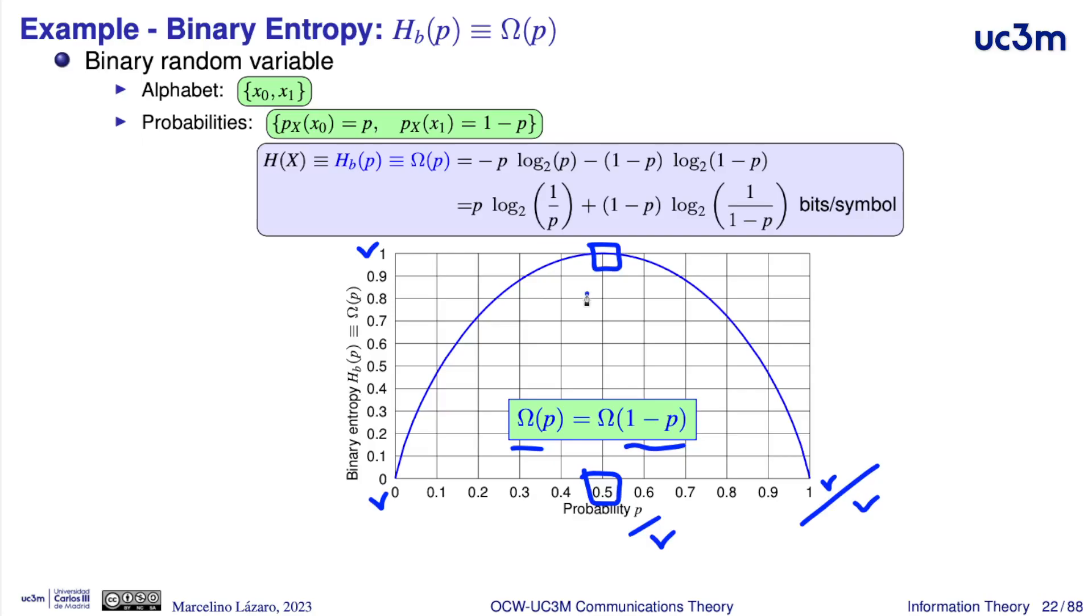Sometimes, this case, when we have here the maximum uncertainty equal to 1, is used as a reference. Because, in this case, we have a bit per symbol as uncertainty, and this is the basic measure unit for the entropy.